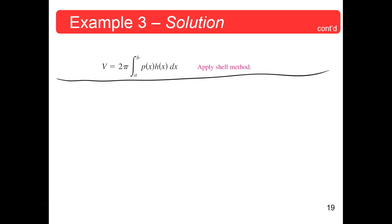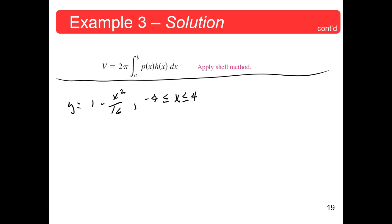Example 4 is the volume of a pontoon. If you're not a boater, a pontoon is a device filled with air that holds up a structure, usually a boat. The pontoon is designed by rotating the graph of y = 1 − x²/16, for −4 ≤ x ≤ 4, about the x-axis, where x and y are measured in feet. Find the volume of the pontoon.